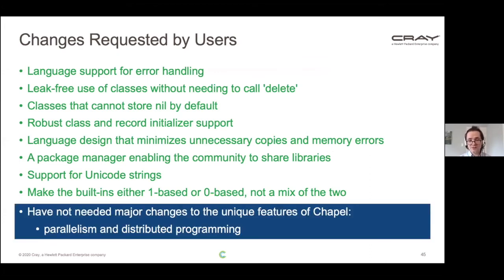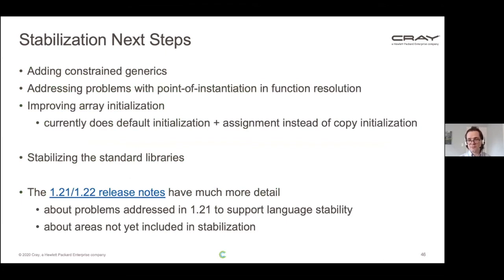Here was our list from earlier in the presentation of changes requested by users. I colored them green to indicate that we think we've addressed them in a way that can be stable going forward. I want to point out that the research project was focused on demonstrating parallelism and distributed programming in Chapel — it didn't much focus on getting all these other things stable. So we've gone back and done that now, but we haven't needed to change much about the parallelism story. Next steps include stabilizing the standard libraries — adding constrained generics will be a big help. We want to address problems with point of instantiation and improve array initialization. The release notes for 1.21 and 1.22 have much more detail.